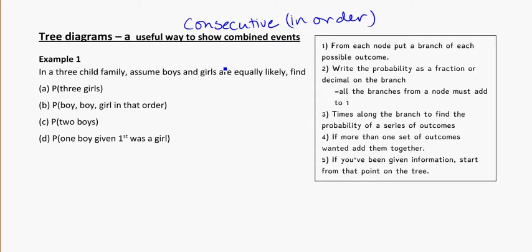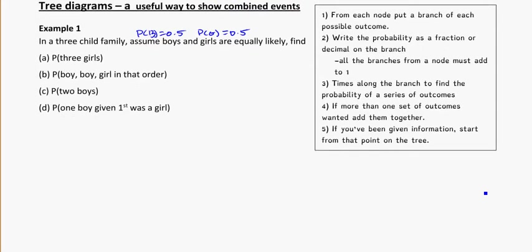We're going to assume the probability for boys and girls are equal. So the probability of having a boy is 0.5, and the probability of having a girl will be 0.5. I've got a few questions for us to answer, but we've got to start building up the tree.